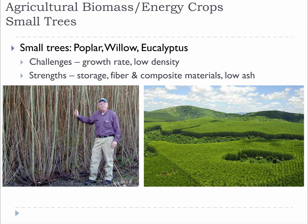The small trees that are considered energy crops are poplar, willow, and eucalyptus. They all have the same strengths as forest biomass but less of the weaknesses. They are a cleaner, cheaper source of wood, and because they are higher density, they have better transportation economics than grasses. They also have the potential to be used for other markets if bioenergy markets are not strong for some reason. However, you have to keep in mind that they do have a slower growth rate.